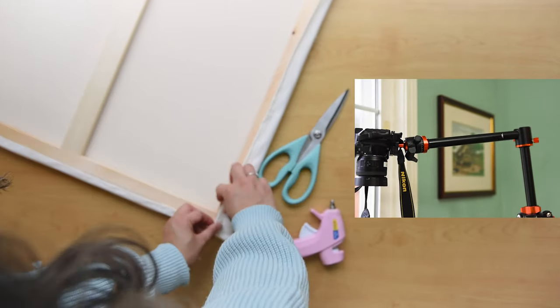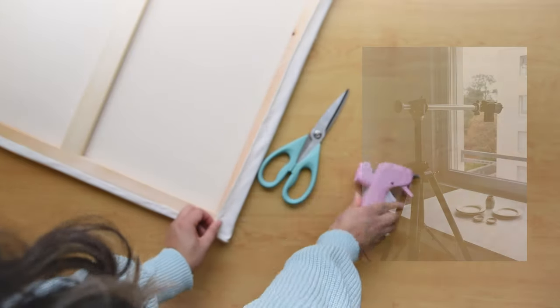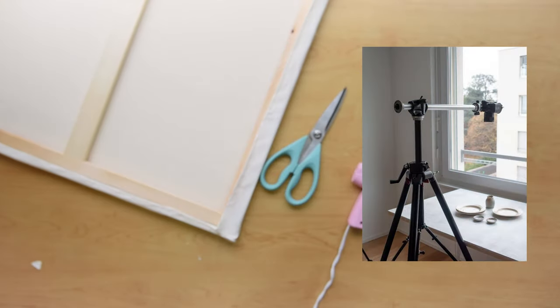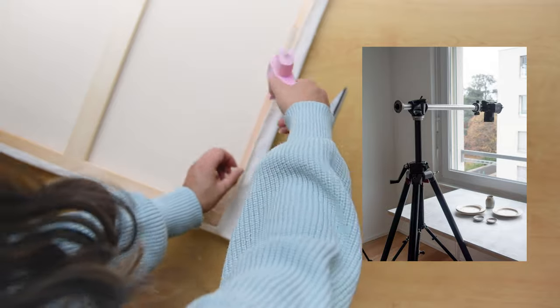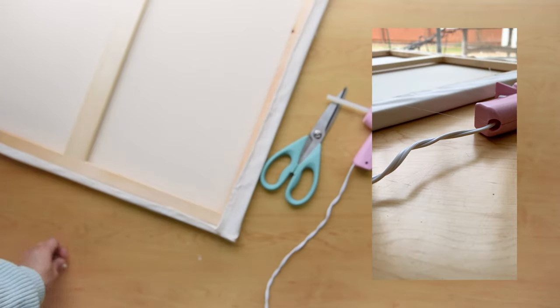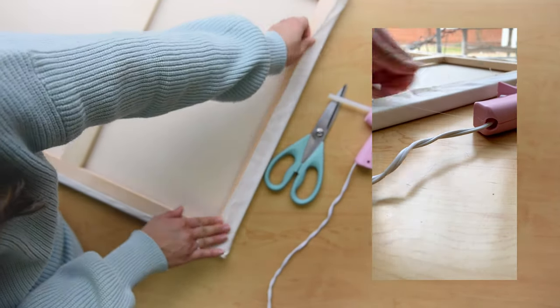And then another pro tip about shooting flat lays, you may want to get a tripod with a boom arm. And I can link one down below. But basically, it's just a tripod that lets your camera hang down parallel to the ground. So this is perfect if you don't want to have to hold the camera forever.